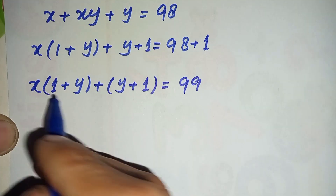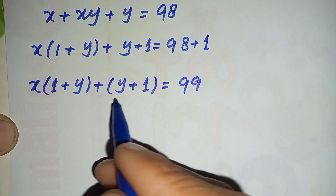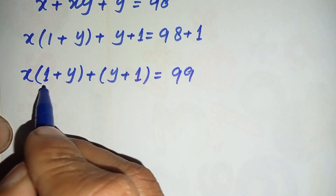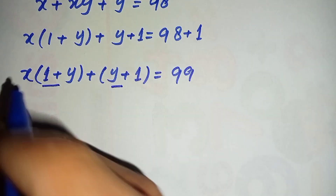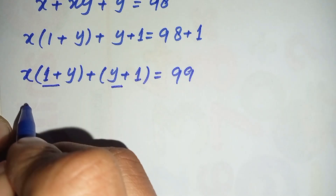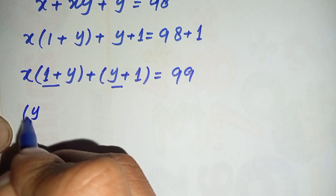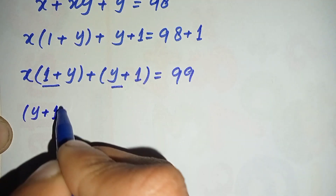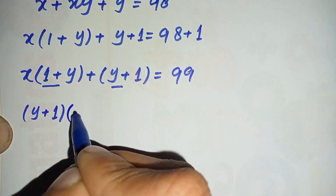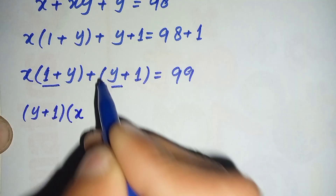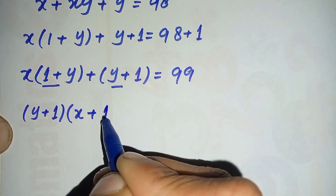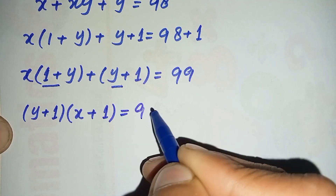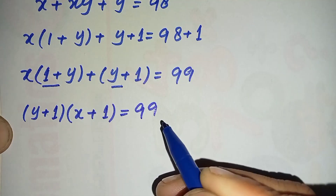Since (1 + y) and (y + 1) are the same, from these two terms we will take (y + 1) common. So it becomes (y + 1)·(x + 1) = 99.